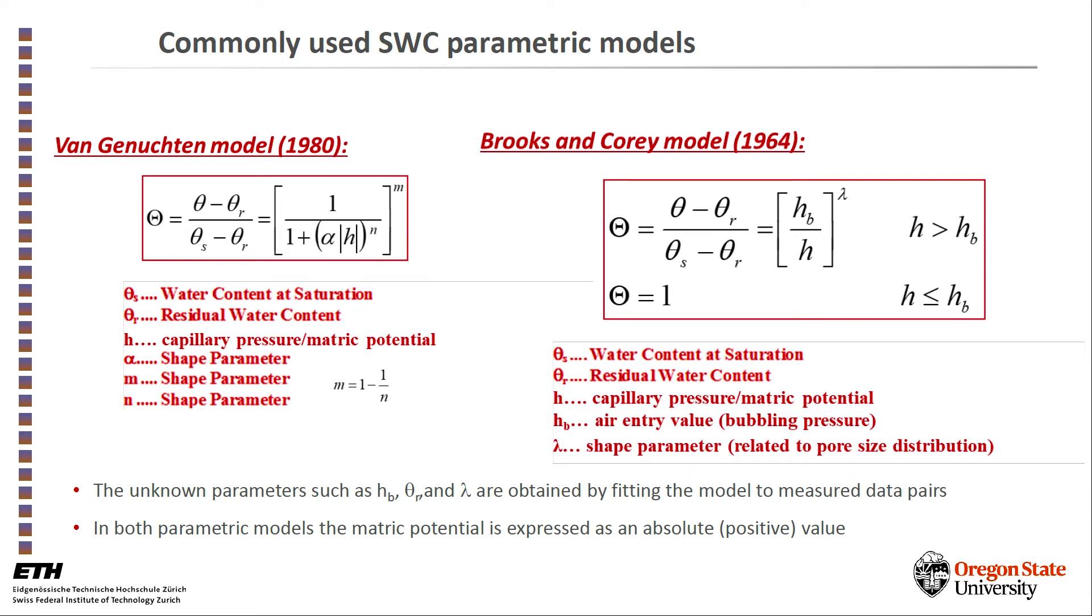Later on, in the 80s, van Genuchten came up with a parametric model that has about the same parameters to do the same job and there is some equivalency between the parameters of these two parametric models. The main difference, however, is the van Genuchten model is continuous all the way from saturation to residual water content.